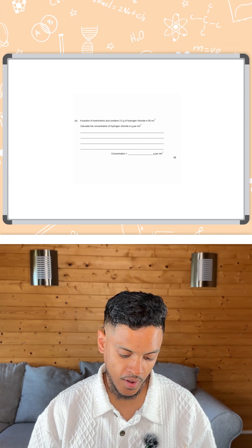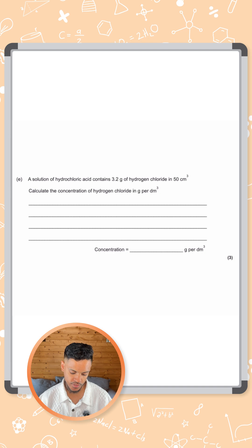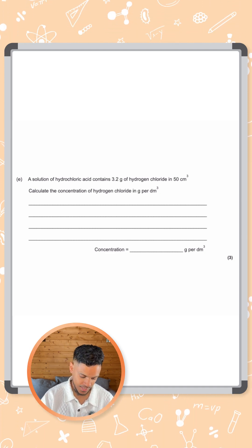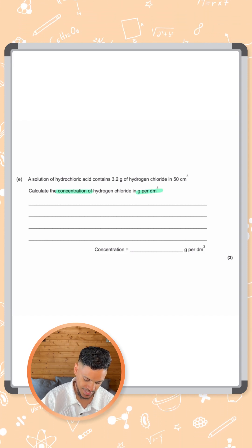Okay, so this question says a solution of hydrochloric acid contains 3.2 grams of hydrogen chloride in 50 centimeters cubed. Calculate the concentration of hydrogen chloride in grams per dm cubed.